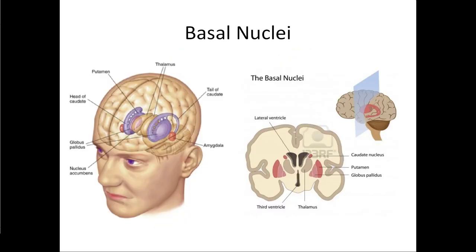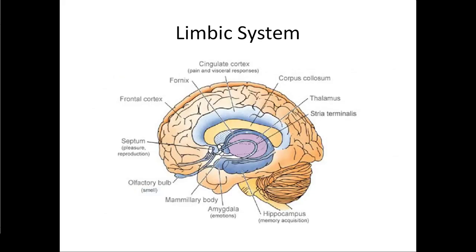Moving on, there are a few other pieces to discuss: the basal nuclei and a little more on the limbic system. The basal nuclei are important for a lot of low-level control and emotional control. We've got the caudate nucleus, which is a big part of the limbic system, and the amygdala, which is sometimes referred to as the fear center — it mediates fear response and a lot of other associated negative responses.